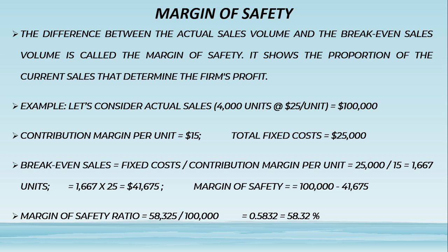The margin of safety will be $100,000 (actual sales) minus $41,675 (break-even sales) = $58,325. The margin of safety ratio is $58,325 divided by $100,000 = 0.5832, or 58.32% as a percentage figure.